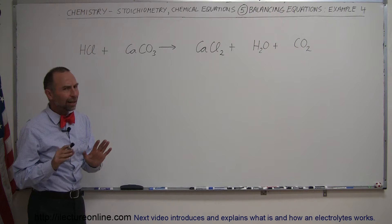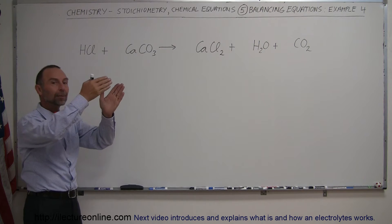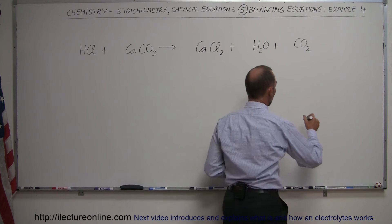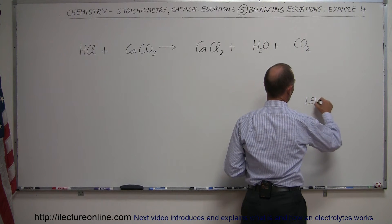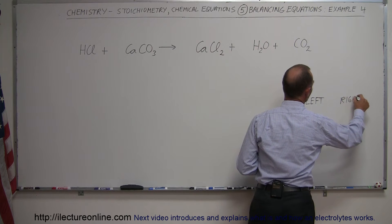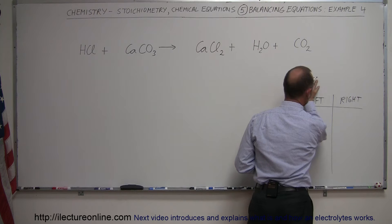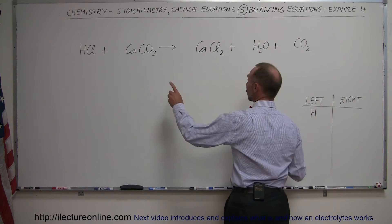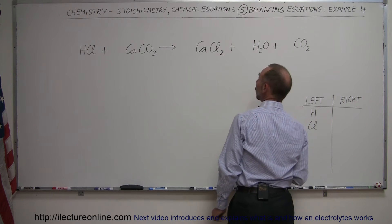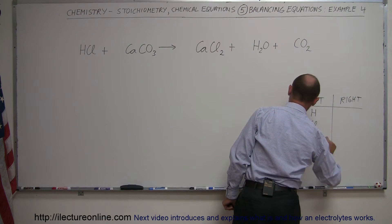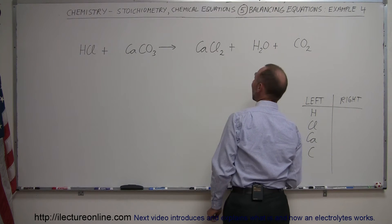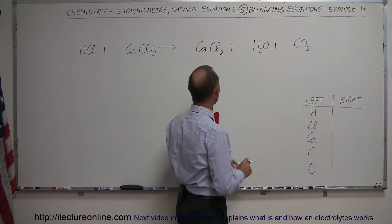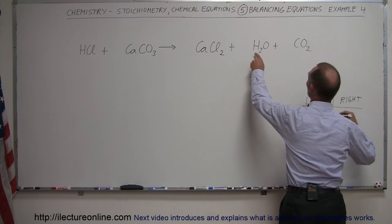Sometimes it helps to keep track of everything by writing down all the elements that appear on the left side of the equation and all the elements that appear on the right side. So let's do that — we have left and right sides. On the left side we have hydrogen, chlorine, calcium, carbon, and oxygen. So we have five elements on the left side, and hopefully we have the same five on the right side.